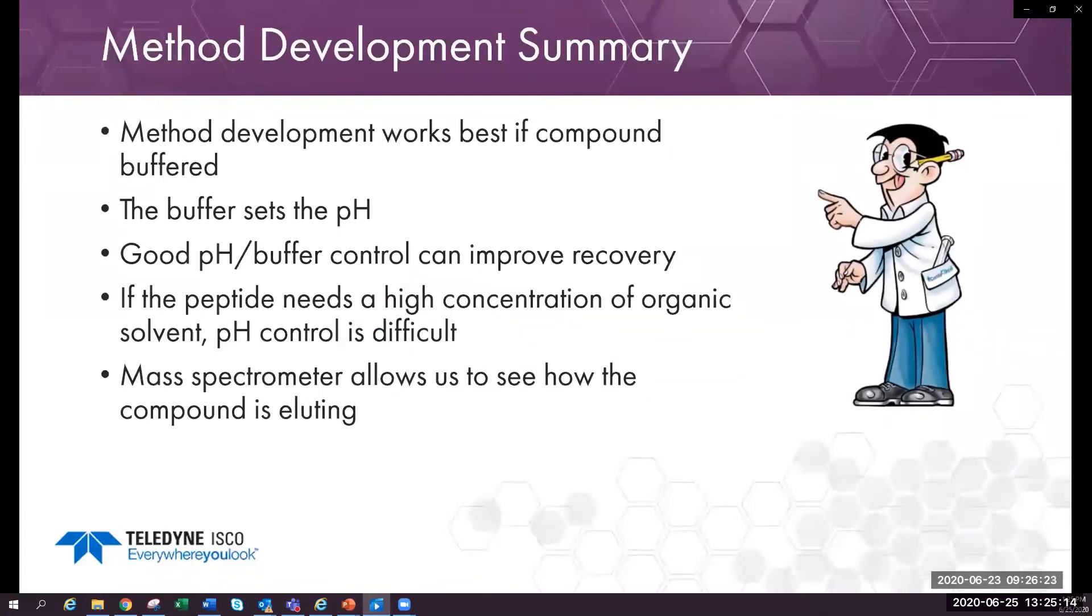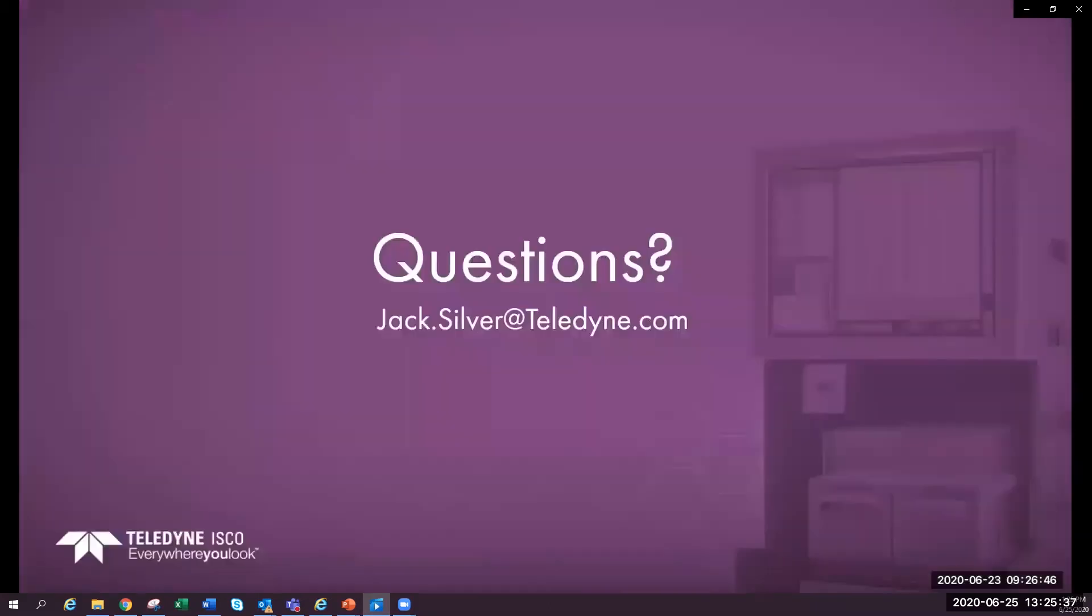To summarize this section, recovery is improved because of improved peak shape. The entire peptide is in a single peak, not in several peaks. We see this issue with preparative chromatography because the sample concentration is so high compared with analytical techniques. In analytical chromatography, the modifier concentration is usually very high compared to the sample concentration.